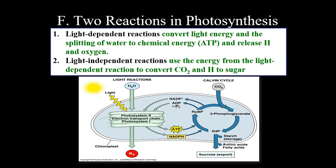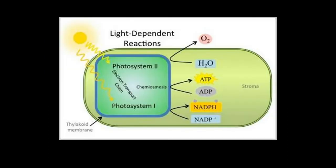There are two reactions in photosynthesis. Light-dependent reactions convert light energy and the splitting of water to chemical energy in the release of hydrogen and oxygen. Light-independent reactions use the energy from the light-dependent reaction to convert carbon dioxide to sugar.